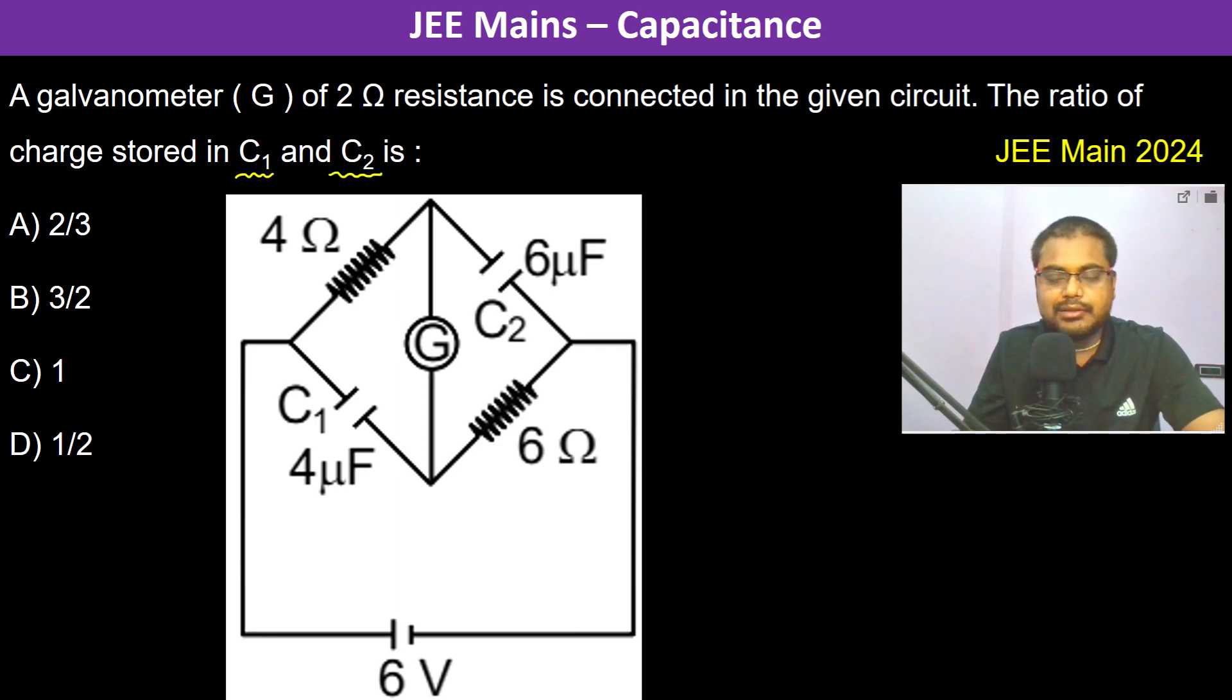In an RC circuit, the charge developed is something like this - it depends upon time. Now because the charge stored in C1 and C2 is asked and time is not given, we are going to take t equals infinity. At t equals infinity, the charge has become constant, Q naught.